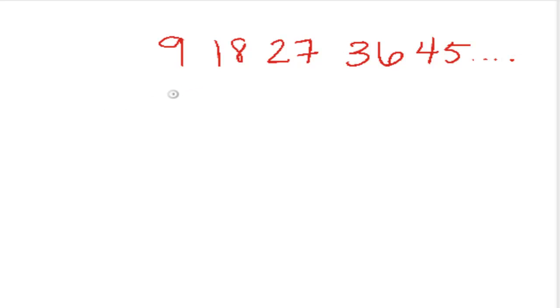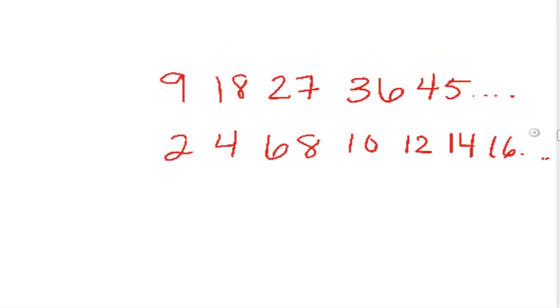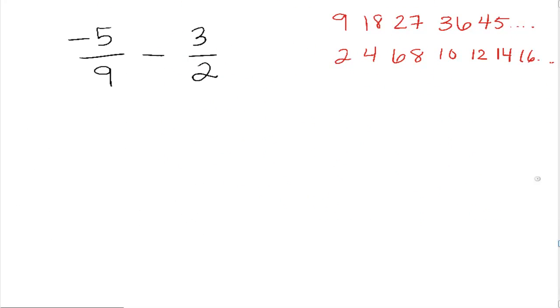And the multiples of 2 would be 2, 4, 6, 8, 10, 12, 14, 16. So, least common multiple. First one they had in common was actually, I'd have to keep going on this because I don't see any in common. So I'm going to have to keep going on this bottom one. The next thing after 14, 16 would be 18. And there we go. We finally have a common denominator. It would be 18.